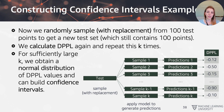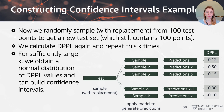We're going to calculate DPPL again on all of these data points and repeat this K times. The idea is that if we have a sufficiently large value of K, we should obtain a normal distribution of the DPPL values.